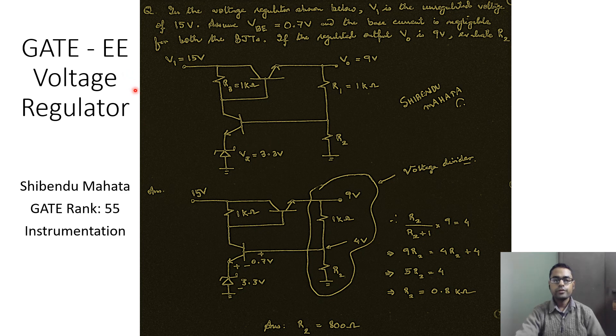This is a GATE problem from voltage regulator, based on discrete components comprising of bipolar junction transistors and Zener diode.